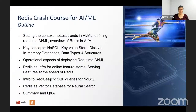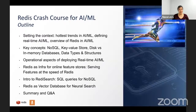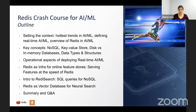Thanks very much, Taimur and Nathan, for hosting us. Before I begin, I'll go over what we're going to cover today. We'll start by setting the context, then talk about key concepts for NoSQL in-memory databases, the operational aspects of deploying real-time AI, Redis as the infrastructure for online feature store, an introduction to Redis Search, Redis as a vector database for neural search, and then summary and Q&A.